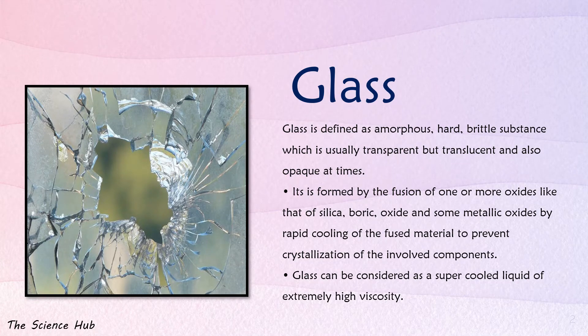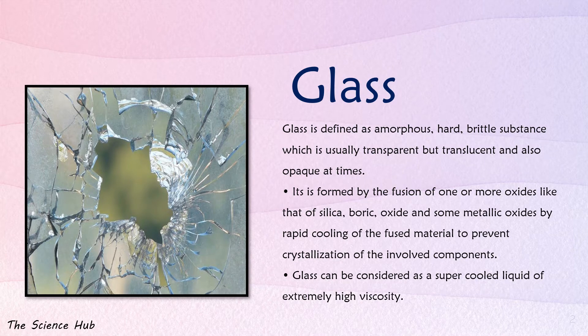Glass is formed by fusion of one or more oxides — like silica, boric oxide, and some metallic oxides — by rapid cooling of the fused materials to prevent crystallization of the involved components.